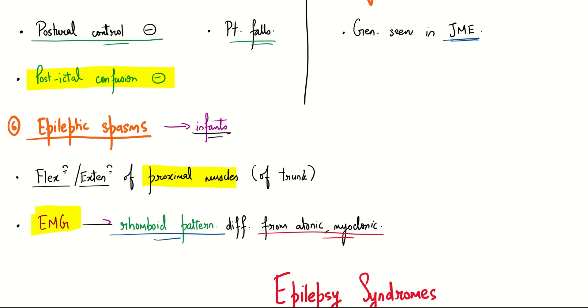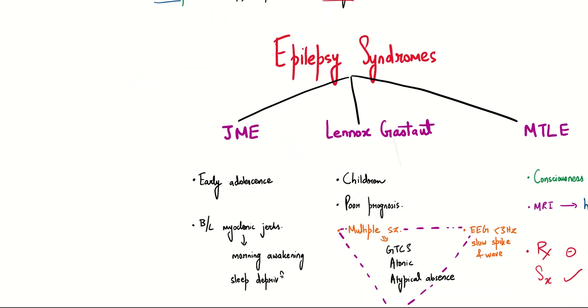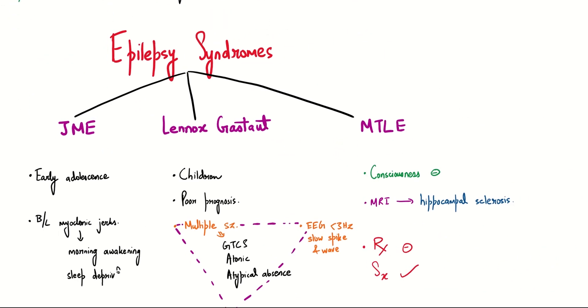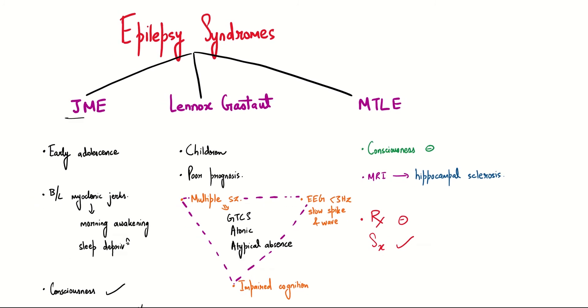Last of all, we have the epilepsy syndromes. Here we discuss juvenile myoclonic epilepsy, Lennox-Gastaut syndrome, and mesial temporal lobe epilepsy.